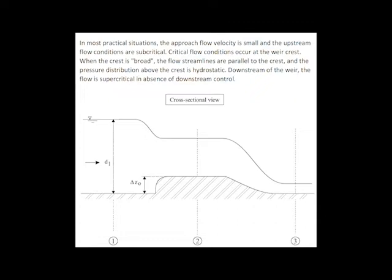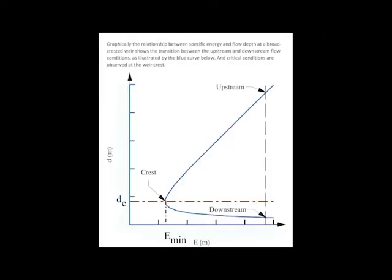Critical flow conditions occur above the weir crest when the crest is broad and the streamlines are parallel to the crest. Hence, the pressure distribution is hydrostatic. Downstream of the weir, the flow is supercritical in absence of downstream control.